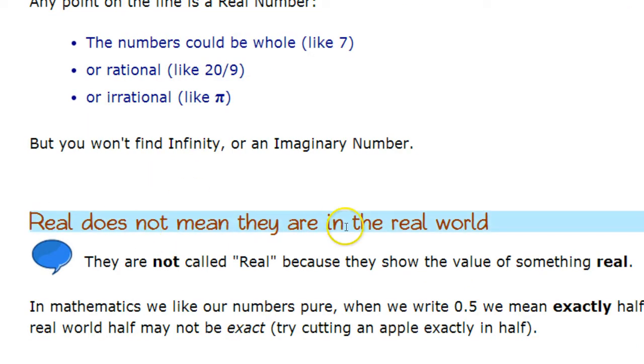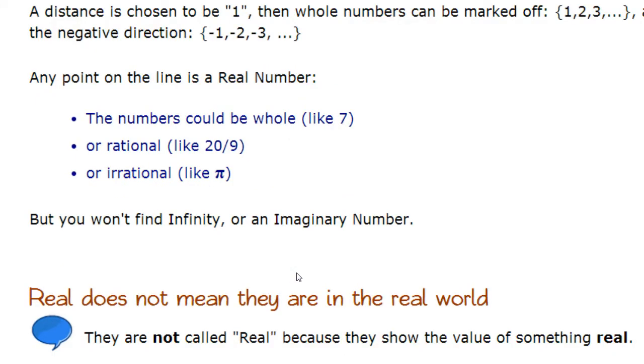Real does not mean they are in the real world, though. They are not called real because that shows the value of something real. In mathematics, we like our numbers pure. When we write 0.5, we mean exactly half. The real world, half may not be exact. Try cutting an apple exactly in half.